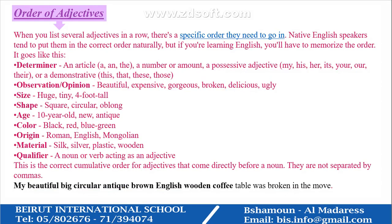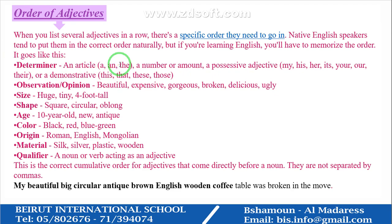Order of adjectives: when you list several adjectives in a row, there is a specific order they need to go in. Native English speakers tend to put them in the correct order naturally, but if you're learning English you'll have to memorize the order. It goes: determiner or article (a, an, the), then a number or amount, then a possessive adjective (my, his, her, its, your, our, their) or a demonstrative (this, that, these, those).